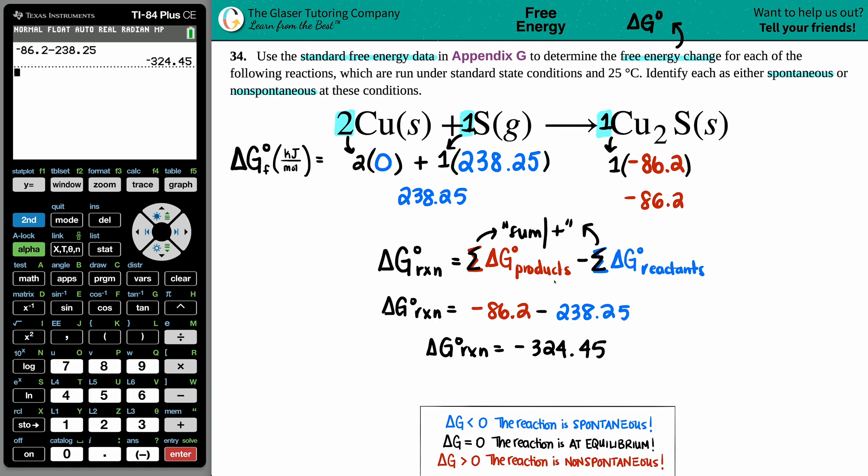However, we have to go by sig figs. Since this is only to the tenths place and this is to the hundredths, we're only allowed to take it to the tenths place. So this 4.45, the five rounds the four up to a five. This would be negative 324.5 kilojoules. Keep in mind you're taking your kilojoule per mole value and timesing it by your coefficients. The coefficients are moles, so moles cancel out and you're just left with kilojoules.